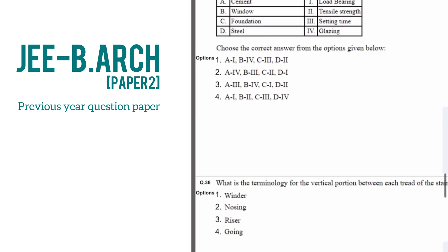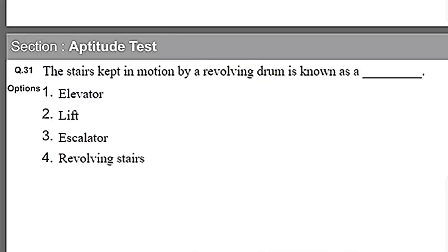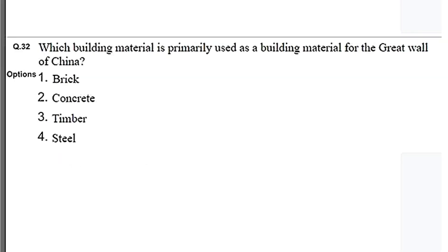In this video we are looking into JWE's 2024 question paper, the aptitude part. Let me know in the comment section if you want the mathematics part as well. The aptitude part starts from question number 31 to 80. Let me know also if you want the drawing part.